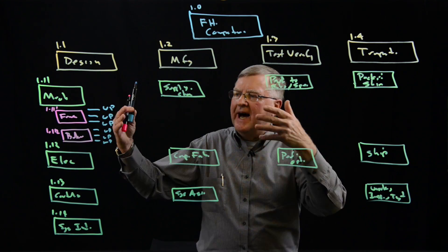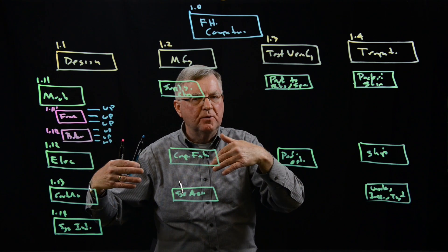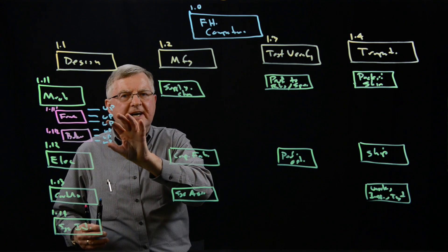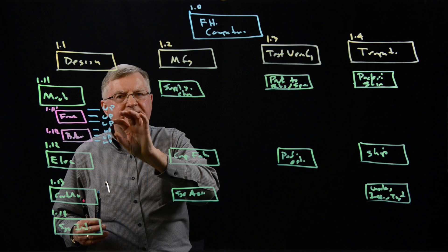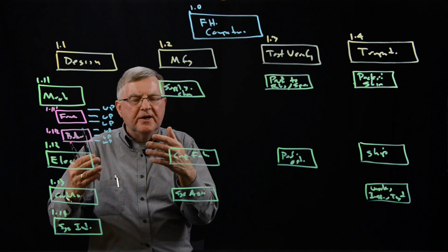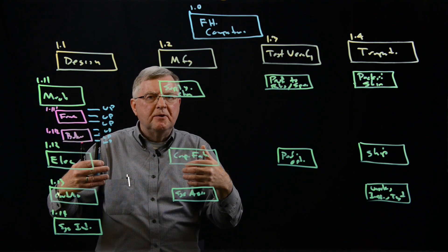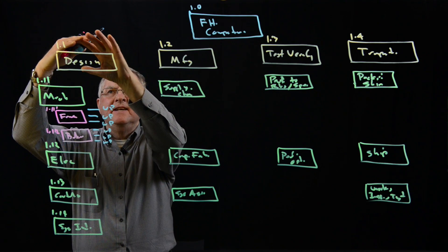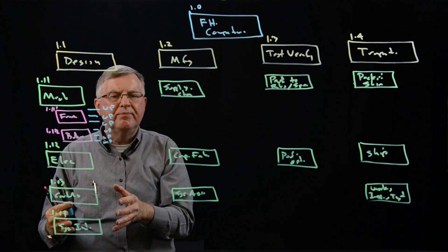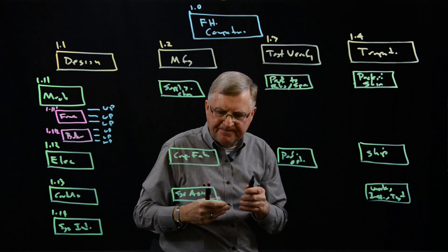Usually we stop at five or six levels of the work breakdown structure, because this gets us to the individual tasks we want to assign. If we need to go beyond six levels, we might consider breaking that portion into a self-contained subproject and managing it as a subproject.